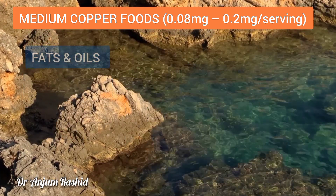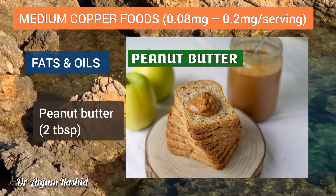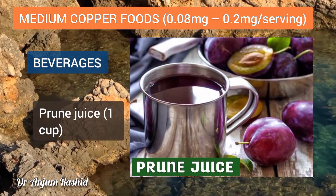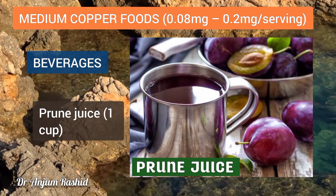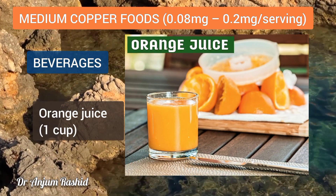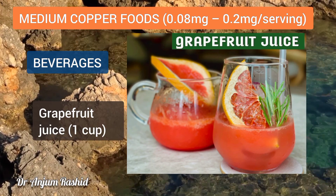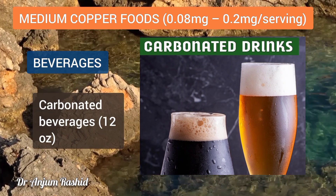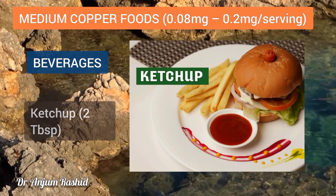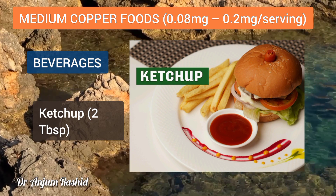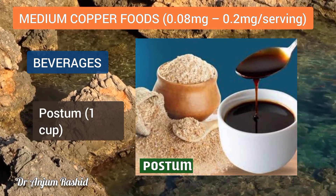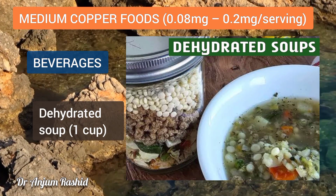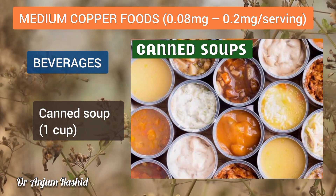Medium copper fats and oils include peanut butter (2 tablespoons). Medium copper beverages include prune juice (1 cup), orange juice (1 cup), grapefruit juice (1 cup), pineapple juice (1 cup), carbonated beverages (12 oz), ketchup (2 tablespoons), cereal beverages (1 cup), dehydrated soup (1 cup), and canned soup (1 cup).